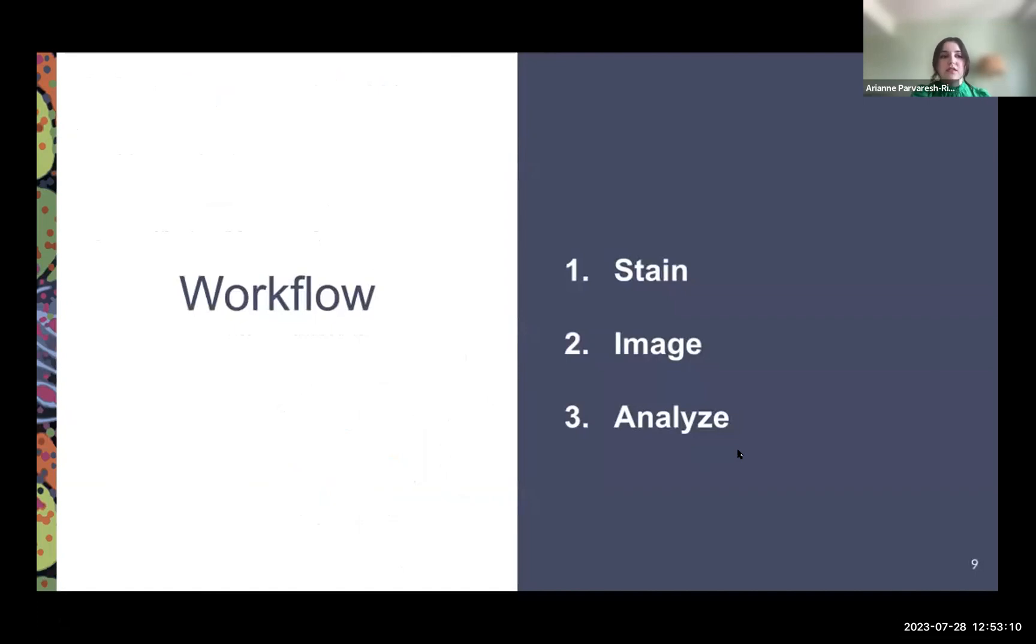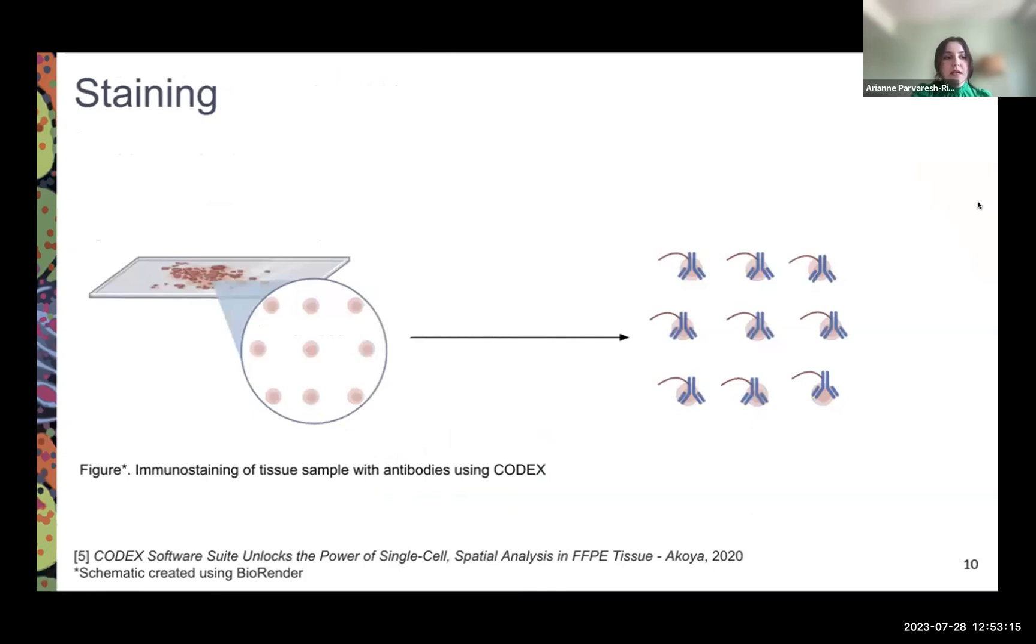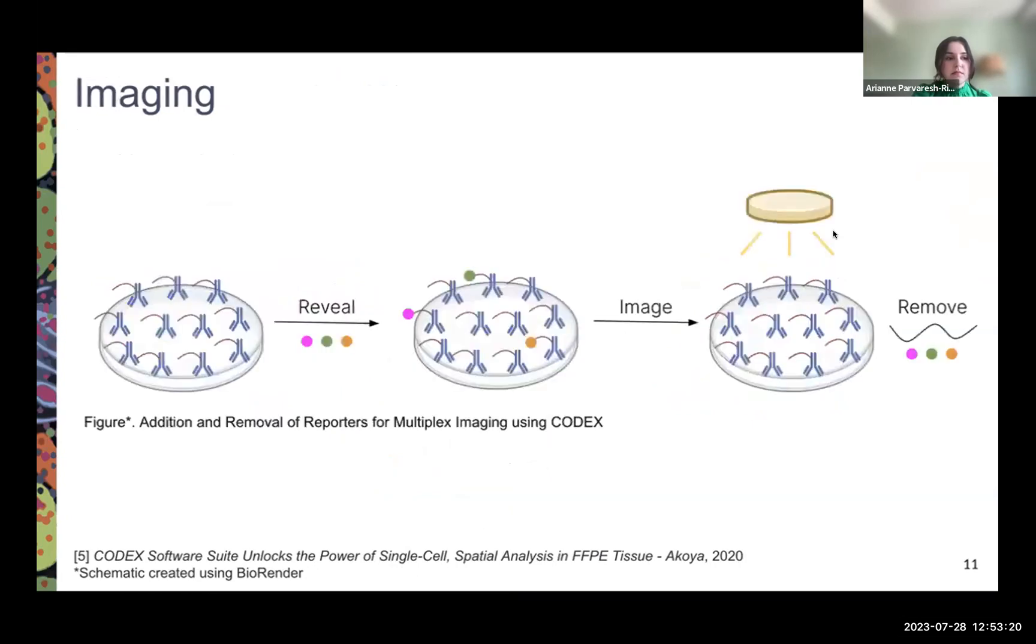The workflow of CODEX involves staining, imaging, and analyzing. In the staining phase, a tissue sample is stained with antibodies. Later, there are cycles, and in each cycle, three reporters are added to reveal three cell markers at a time. These reporters bind to complementary barcodes and are then excited with a light source. They fluoresce, and that's when the software images the tissue with three markers. After each cycle, the reporters are removed, and the cycle repeats until all the markers on the panel are revealed and imaged in the tissue.